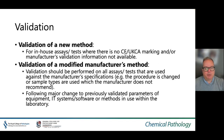In summary, a validation would take place when you are validating a new method — for example, in-house assays or tests where there is no appropriate international marking standard available, or where method validation information is not available. You could also validate a modified manufacturer's method, and validation should be performed on all assays used against the manufacturer's specification, for example where the procedure is changed or the sample types used are not what the manufacturer recommends.